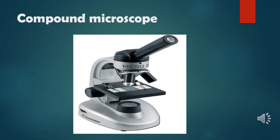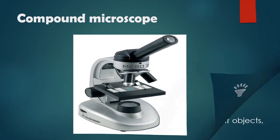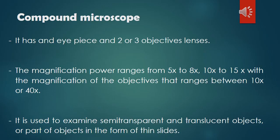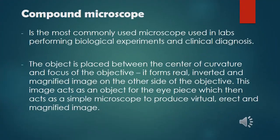The compound microscope has an eyepiece and two or three objective lenses. The magnification power of the eyepiece ranges from 5 to 8 times or 10 to 15 times, with the objective magnification ranging between 10 to 40 times. It is used to examine semi-transparent and translucent objects in the form of thin slides, and is the most commonly used microscope in labs for biological experiments and clinical diagnosis. The object is placed between the center of curvature and focus of the objective.